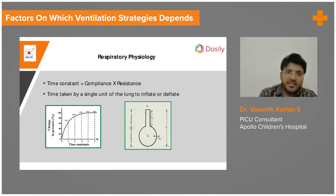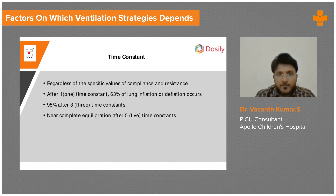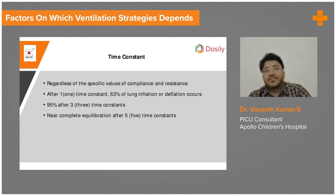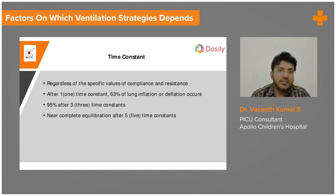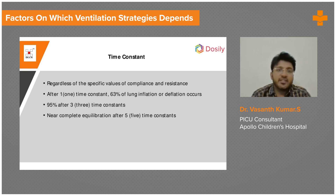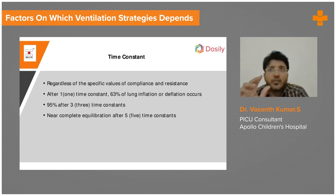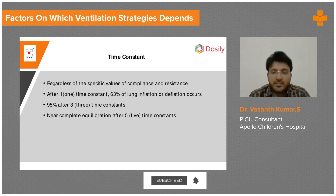The time constant can be defined as how long it takes for air to go into the lungs. In one time constant, 63% of the lung gets inflated or deflated. By three time constants, 95% of the lung gets inflated or deflated. By five time constants, close to 99% of the lung is filled with air. This is a very important concept because the time constant helps you determine your inspiratory time.